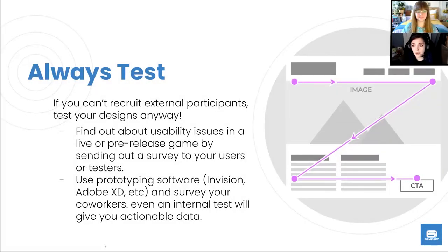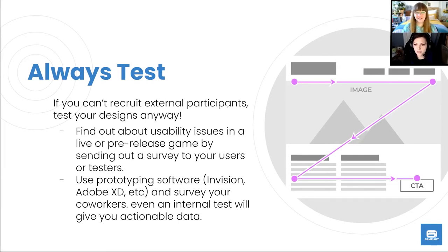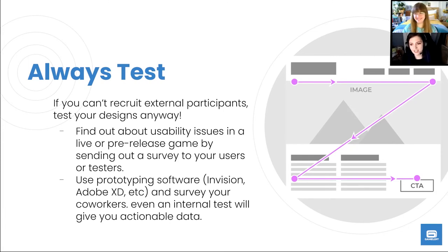Always test your designs — even if you can't recruit external participants or run an official user test, it's okay to get scrappy. Find out about usability issues in a live or pre-release game by sending out a survey to your users or testers. Use prototyping software such as InVision or Adobe XD to create clickable prototypes and pass them to coworkers — especially people on other teams not related to UI — and send out a survey to see how they felt. Even gathering data from coworkers will still give you actionable results.